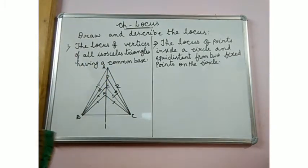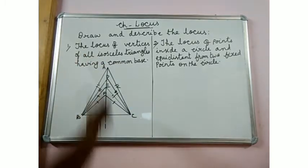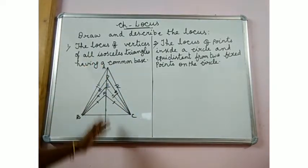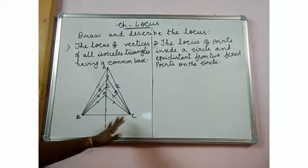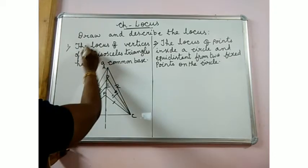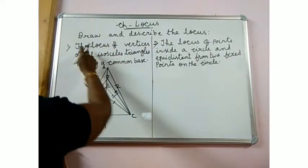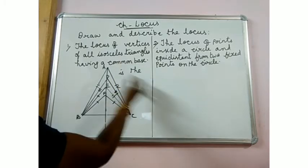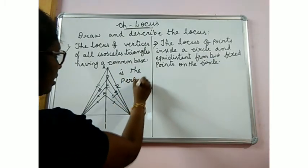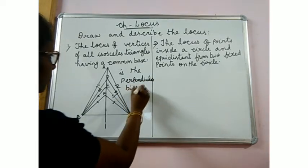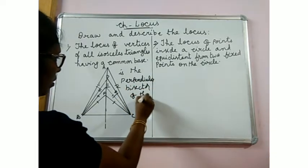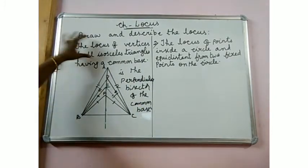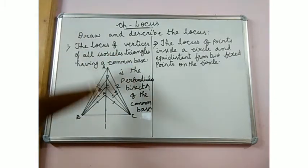You know that in an isosceles triangle, the perpendicular bisector of BC is the base. So when you join all the vertices of the isosceles triangles, the locus will be the perpendicular bisector of BC, the base. The locus of vertices of all isosceles triangles having a common base is the perpendicular bisector of the common base.